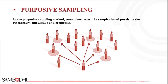In purposive sampling, also called judgmental sampling, researchers select the sample based purely on the researcher's knowledge and credibility. In other words, researchers choose only those people who they deem fit to participate in the research study. Judgmental or purposive sampling is not a scientific method of sampling.